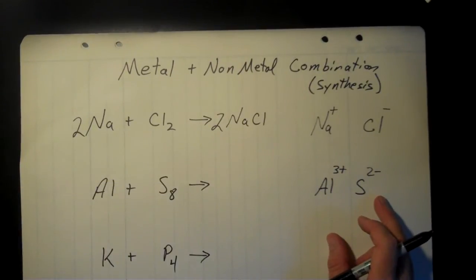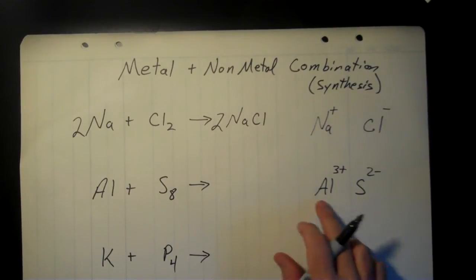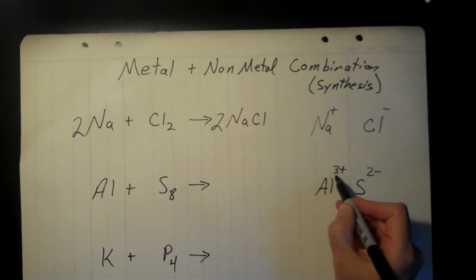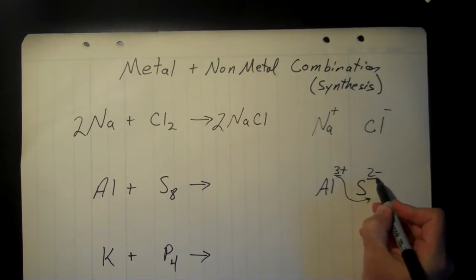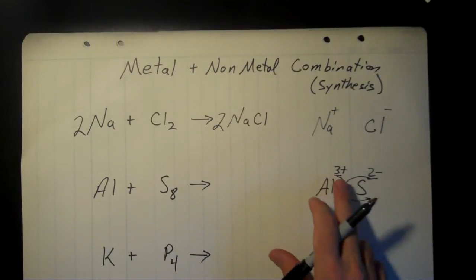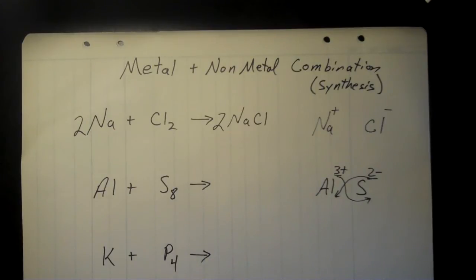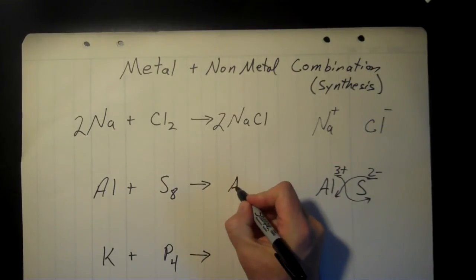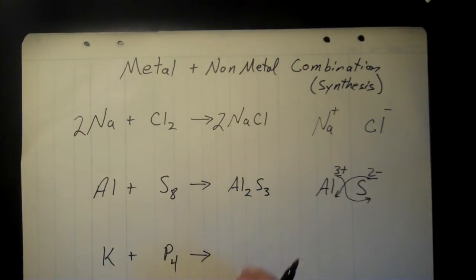In that case, those charges are not balanced, and so what we need to do there, there's two ways we can do this. The shortcut way, which most of the time will work for you, is what I call the crisscross. I'm just going to take the charge here on the aluminum, and that tells me how many sulfurs I need. I'm going to take the charge on the sulfur, and that tells me how many aluminum atoms I need. It doesn't always work. Most of the time that will work for you if you've got different charges. If the charges are the same, like we had with sodium and chlorine, then you just need one atom of each. So my formula is two aluminums and three sulfurs, Al2S3. That's our product formula.